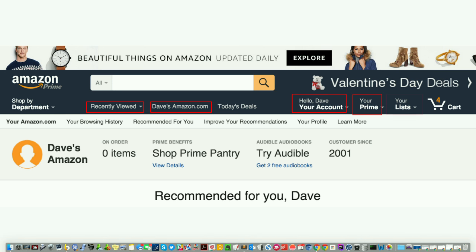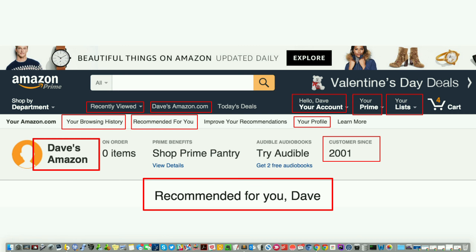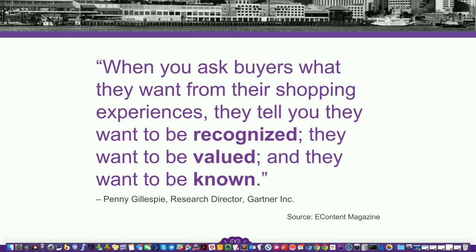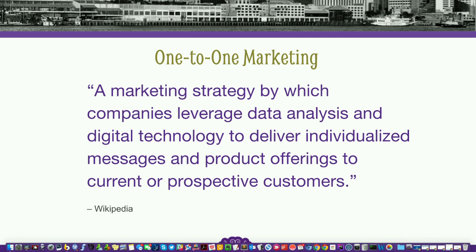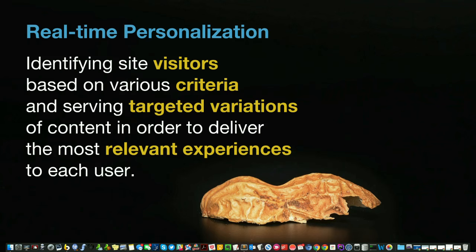Amazon is a great example — almost every aspect of the shopping experience on Amazon is personalized to each individual customer. When you ask buyers what they want from their shopping experiences, they tell you they want to be recognized, valued, and known — that's a quote from a research director at Gartner. This leads to the concept of one-to-one marketing, defined as a marketing strategy by which companies leverage data analysis and digital technology to deliver individualized messages and product offerings to current or prospective customers. Personalization today is really referred to as real-time personalization — identifying site visitors based on various criteria and serving targeted variations of content to deliver the most relevant experiences to each user.